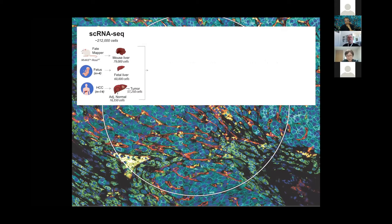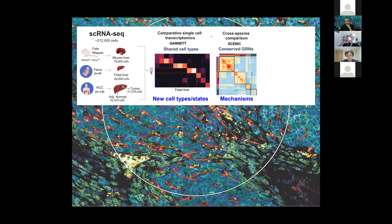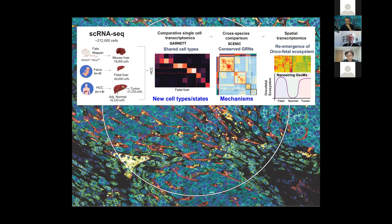We generated an atlas of over 200,000 cells from 14 patients. Multi-sector tumors plus adjacent normal account for about 75,000 cells. We also looked at fetal liver and mouse liver cells, which I'll explain shortly. We used standard pipelines to identify new cell types and cell states, and we're interested in conserved gene regulatory networks that define cell states in tumor versus normal. We also used spatial transcriptomics to validate these observations.